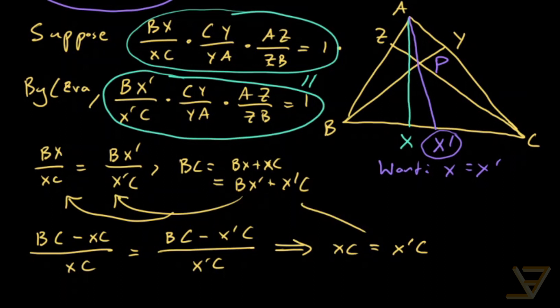And because of what we have up here, it also tells us that BX is equal to BX prime. So what that means is that we have X here and we have X prime here. But they have to be the same point because the distance of X and X prime from B is the same, and the distance of X and X prime from C is the same. That's what these two equations say.